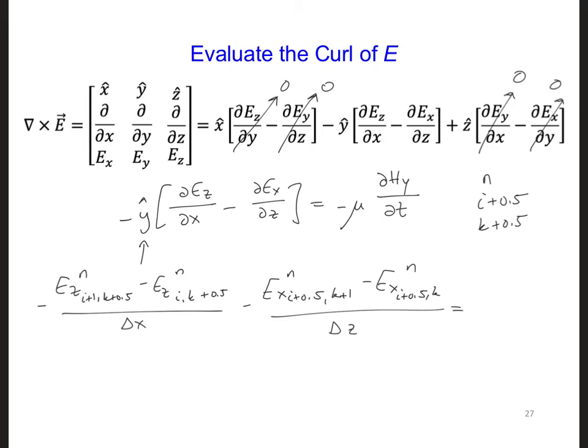On the right side, we get minus mu times Hy at n plus 0.5, i plus 0.5, k plus 0.5. This is a partial time derivative, so we have n minus 0.5 at the same location, divided by delta t.